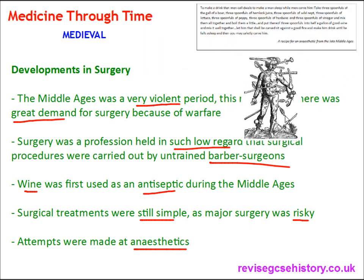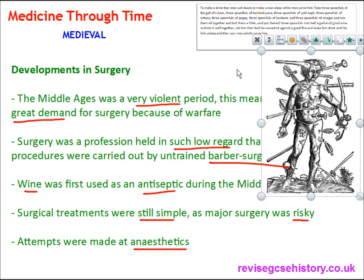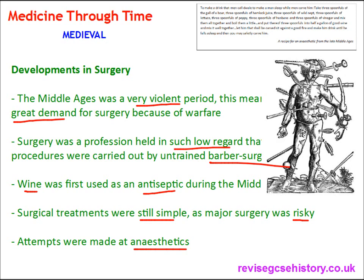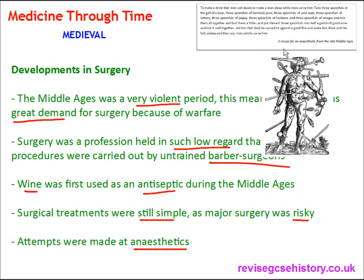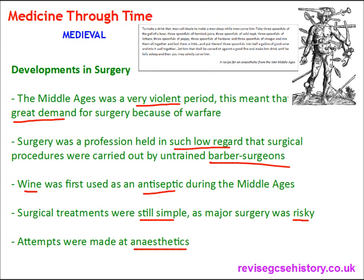This source here shows a wound man, which I've mentioned briefly in a previous video. A wound man told doctors and surgeons the parts of the body they could operate on and different types of injuries gained during war that could be treated. All these warfare injuries could be treated successfully by barber surgeons. The wound man, along with the urine chart and zodiac man, was put together in a little book given to doctors for future reference.